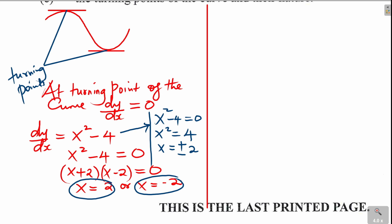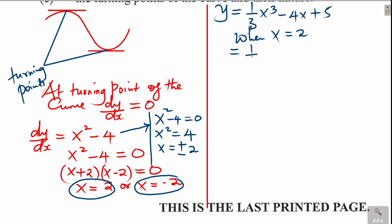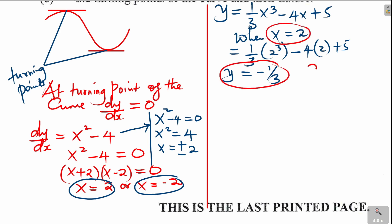To find the full coordinates, we need the corresponding y-values. Using the curve equation y equals one-third x cubed minus 4x plus 5, when x equals 2: y equals one-third times 2 cubed minus 4 times 2 plus 5. Working this out gives y equals negative one-third. So the first stationary point is (2, negative one-third).